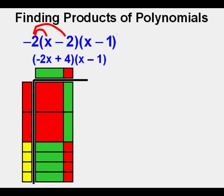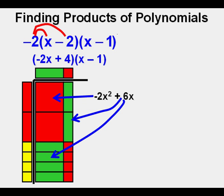And to complete the rectangle we have the product of 4 and negative 1 which is negative 4. And since there are no x terms to cancel we have negative 2x squared and then these 6x is represented by the 6 green rectangles and finally minus 4.